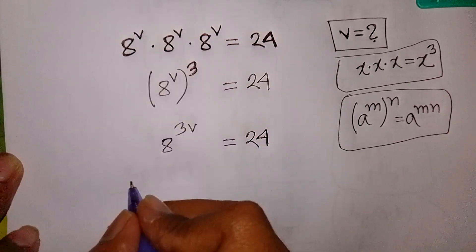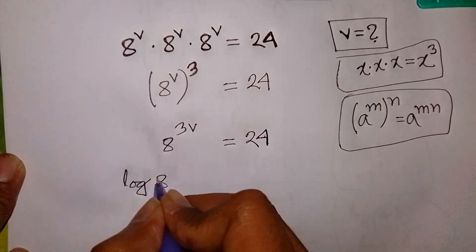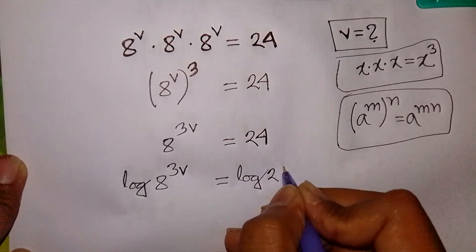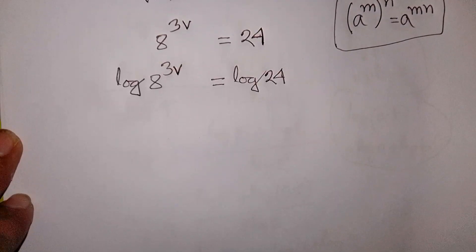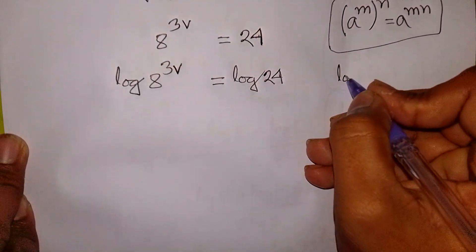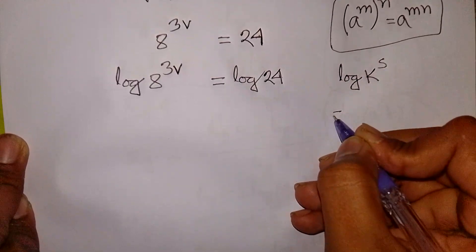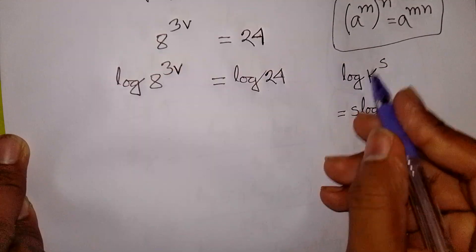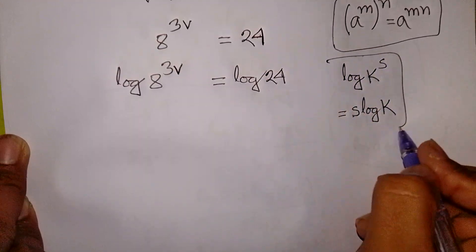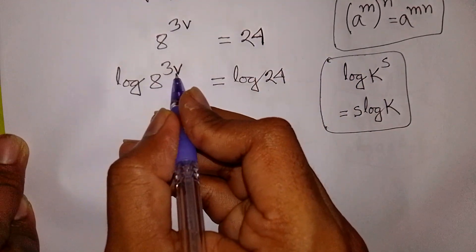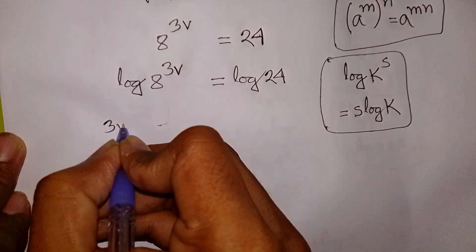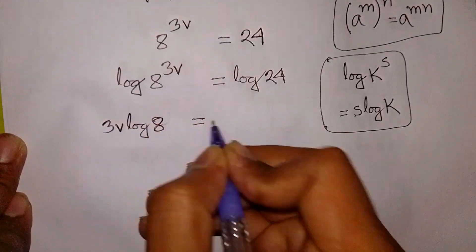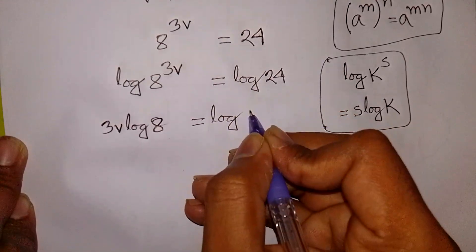Now we apply log on both sides: log of 8 power 3V is equal to log of 24. We apply the rule that log k power s is equal to s·log k — this power s jumps to the front. So it will be 3V·log 8 is equal to log 24.